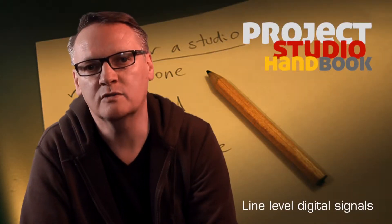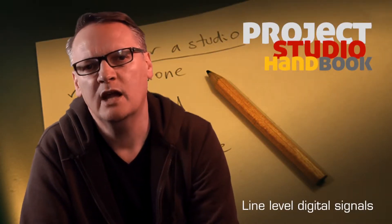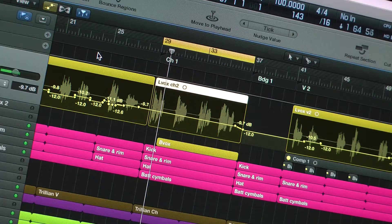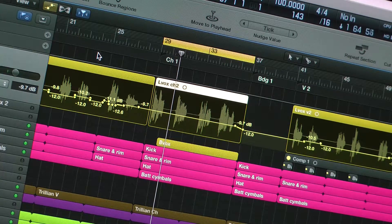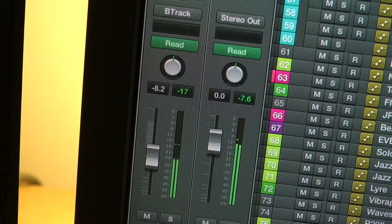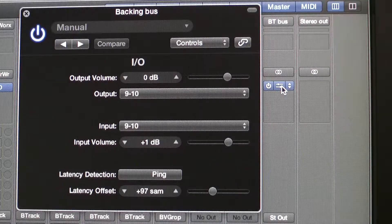Almost all digital signals are at line level, and the signals within a DAW can be considered to be at line level too, because when they exit the DAW they need to be at line level in order to be processed or sent for monitoring.